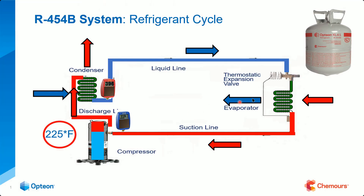Back to the liquid line and back to the starting point — back to our pressure dropper — and it starts the whole cycle. If we drew an imaginary line, no matter what state the refrigerant is in, down at the bottom that is vapor. On top — the compressor and the metering device side — no matter what state, whether vapor or liquid, it's high pressure. The bottom is low pressure.